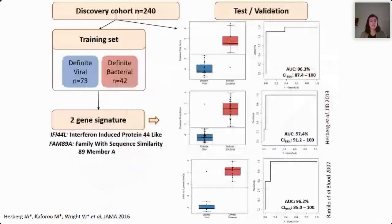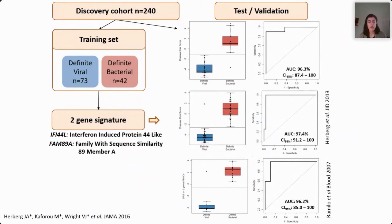Following a similar gene expression analysis pipeline, we were able to identify just two genes that, by measuring them in combination in the blood of patients, allowed us to identify with very good AUC, very good sensitivity and specificity, patients with bacterial infection who can then be followed up and treated with antibiotics, distinct from patients with viral disease.